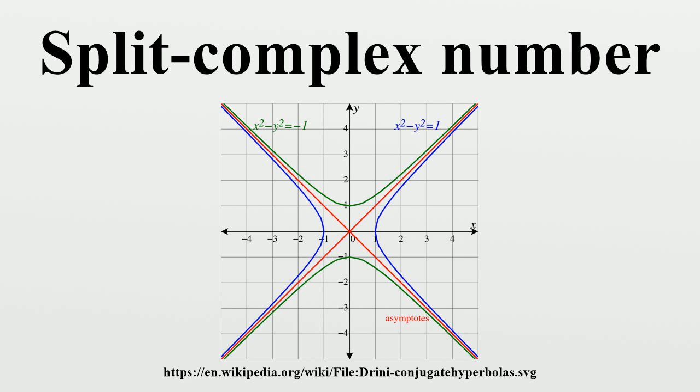However, this quadratic form is not positive definite but rather has signature (1,1), so the modulus is not a norm. The associated bilinear form is given by ⟨z,w⟩ equals xu minus yv, where z equals x plus jy and w equals u plus jv.